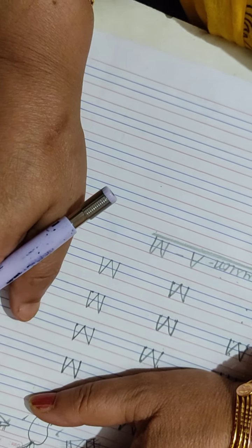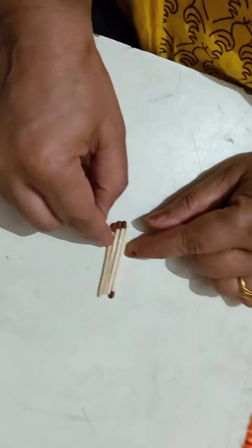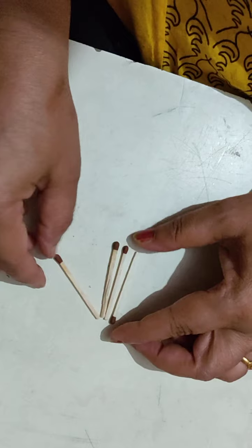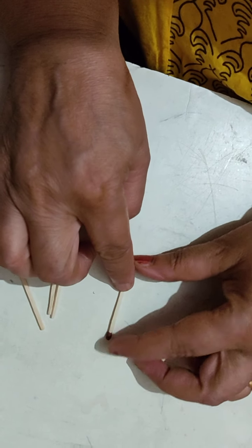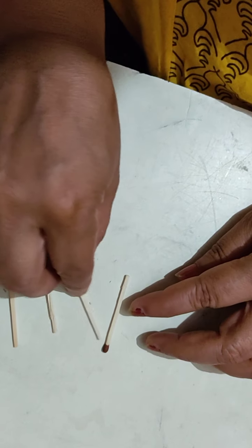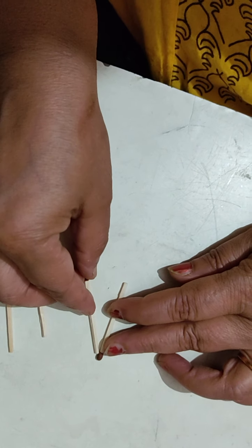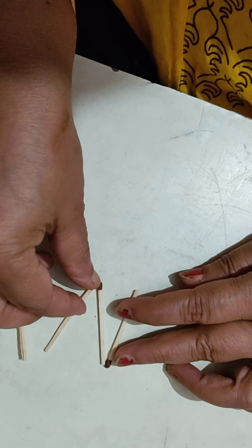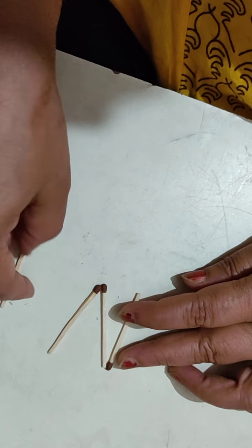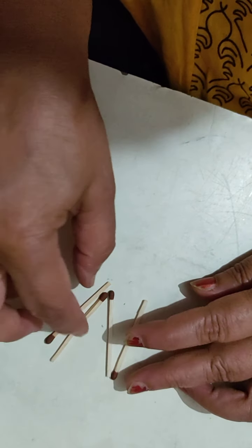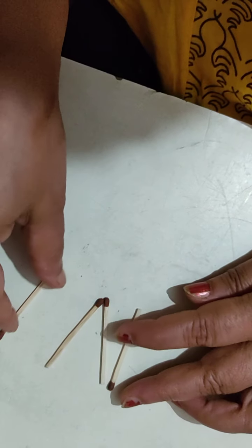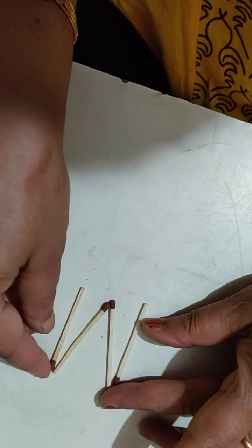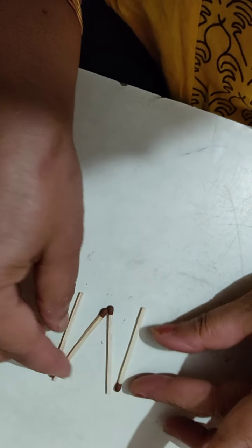Come with me. Now we will do activity. We will take four matchsticks. Okay. First one, put here like a standing line. After that, slanting line. Again, slanting line. And standing line. Complete it.